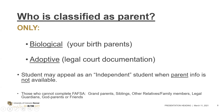If the student is living with a grandparent, siblings, or other relatives, they cannot provide their information on the FAFSA — only the biological parent or if the student was legally adopted. If there's no parental support or parents are not in their lives, the student would want to be considered an independent student if they're under the age of 24.